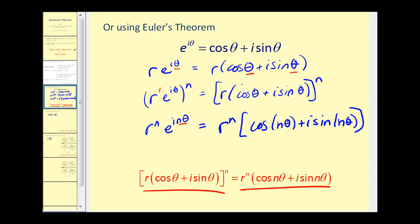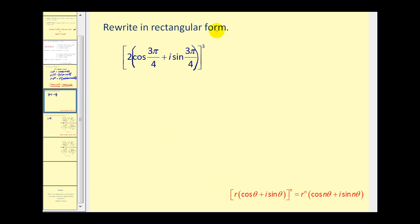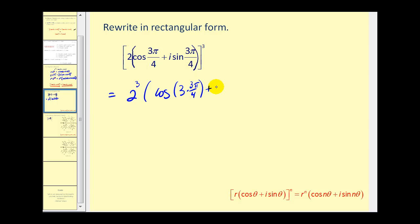Let's go ahead and apply this. We want to rewrite a complex number in rectangular form, but first we'll evaluate it using De Moivre's theorem and then convert to rectangular form. This would be the same as two to the third power times the cosine of three times three pi over four, plus i sine of three times three pi over four. So our angle is going to be nine pi fourths.